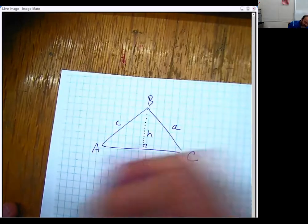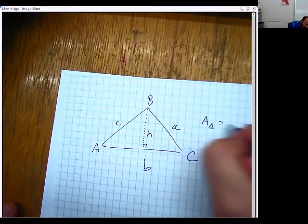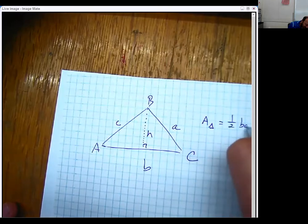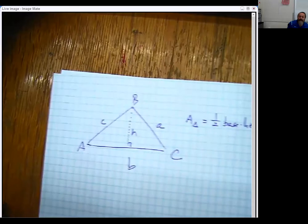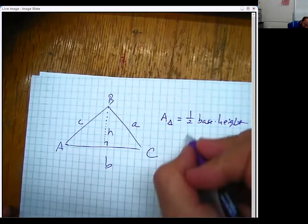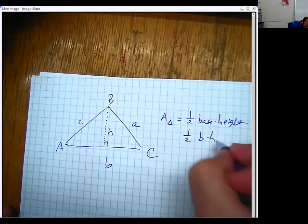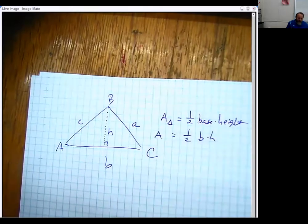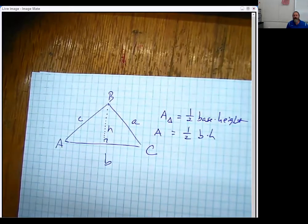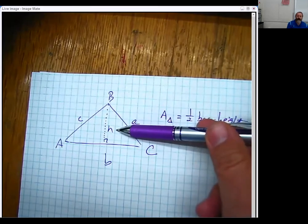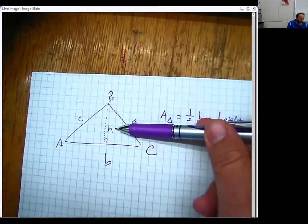And so the area of this triangle would be one half the base times the height, which in this case would just be one half B times H, which is fine. But of course, what I would really like to do is I would like to be able to avoid doing this thing with this H because I don't have that H.